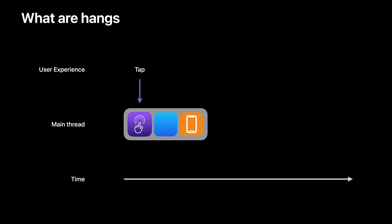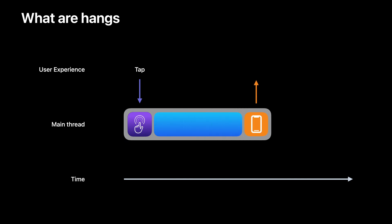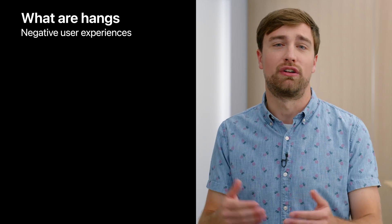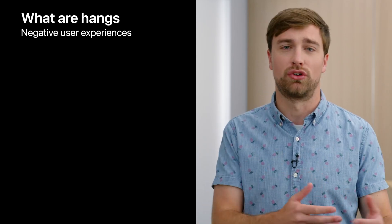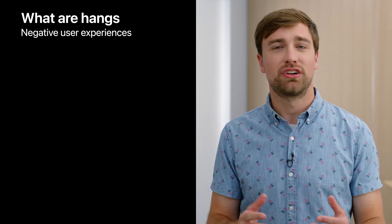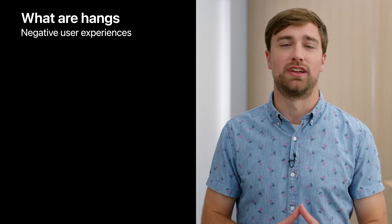An app's main thread is responsible for processing user interactions and updating the view content. A hang is reported when the main thread is busy doing work or waiting on another thread or system resource, causing a delay in updating the view content by at least 250 milliseconds. The main thread is also unavailable to process new user interactions until the hang is resolved. To the user, it appears the app is completely stuck.